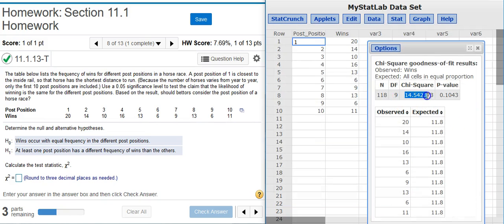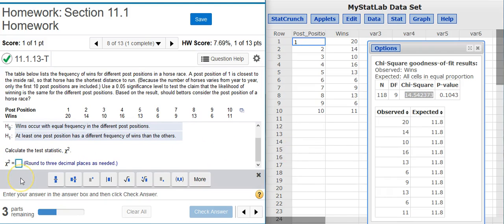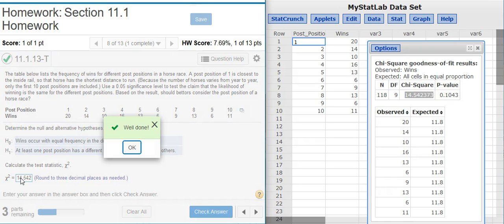And there is my chi-squared test statistic, which I'm asked to round to three decimal places. Well done!